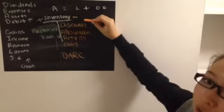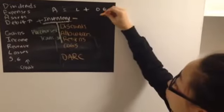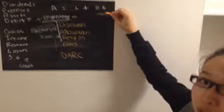That just stands for the discounts, allowances, returns, and cost of goods sold. You know that that carries over to the owner's equity side where they have their own expense accounts.